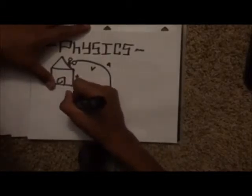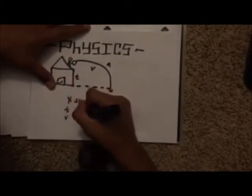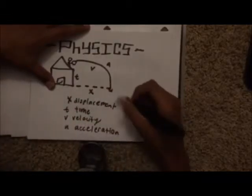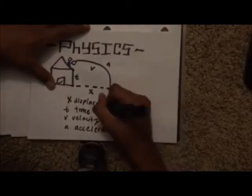There are four basic units of measure: displacement, which is x, measured in meters; time, which is t, measured in seconds; velocity, which is v, measured in meters per second; and acceleration, which is a, measured in meters per second squared.